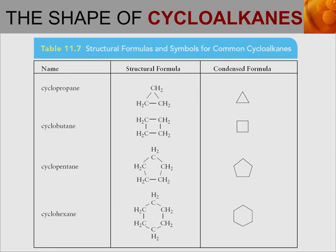In this lecture, we are going to go over a different type of alkane called a cycloalkane. Looking below, normally if we had propane, that would be a normal chain of carbon atoms, and we would have the maximum amount of hydrogens possible. So that would be C3H8.